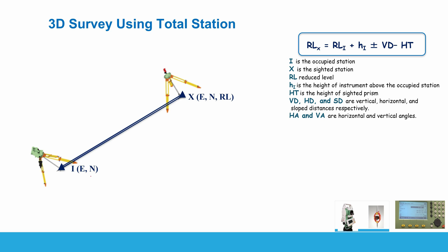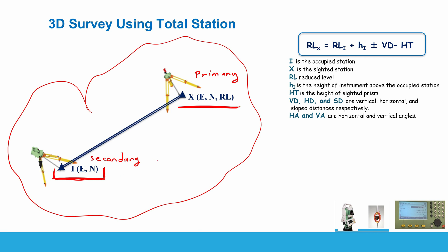Let's take this example: you have a primary control station whose coordinates — easting, northing, and reduced level — are known, and a secondary control station whose easting and northing are known, calculated perhaps by the resection procedure explained in a separate video. Your aim is to survey the whole area from the secondary control station. Because of that, we first need to calculate the reduced level of the secondary control station, which is currently unknown.